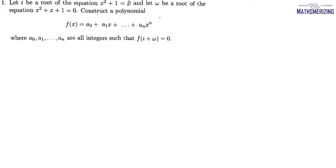Today we will discuss ISI's PSTAT BMath 2020 UGB exam. The first question is: if iota is the root of the equation x² + 1 = 0, and omega is the root of equation x² + x + 1 = 0, then construct a polynomial f(x) with integer coefficients such that f(iota + omega) = 0. This omega is the complex cube root of unity.